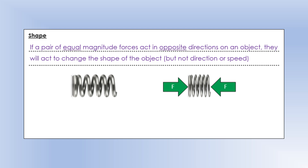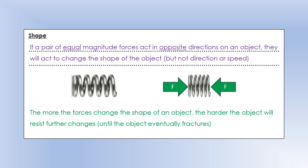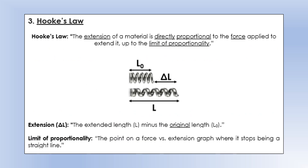A general rule of thumb: the more a force changes the shape of an object, the harder the object will resist any further change - you get a bigger compression force acting back against you. This is true right up until the point where you actually break the object. We can explore this more formally with Hooke's Law, named after Robert Hooke: the extension of a material is directly proportional to the force applied to extend it, but only up to what we call the limit of proportionality.